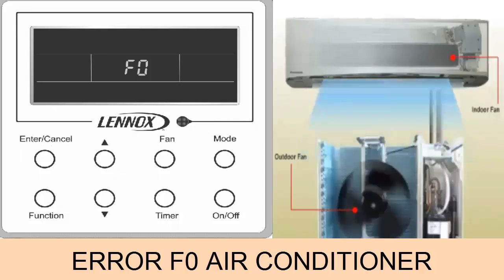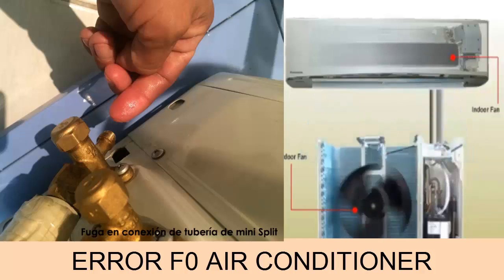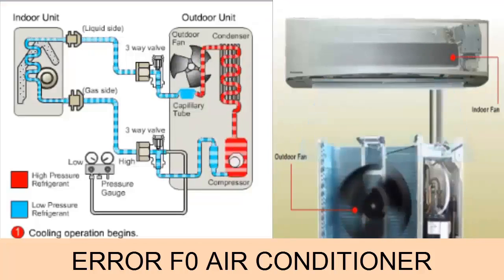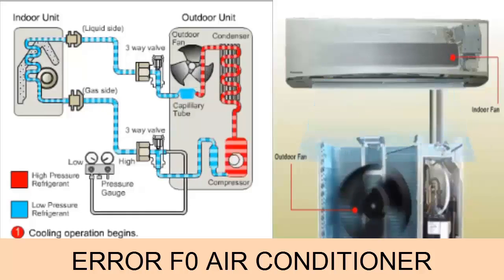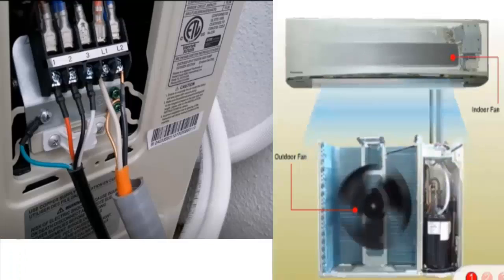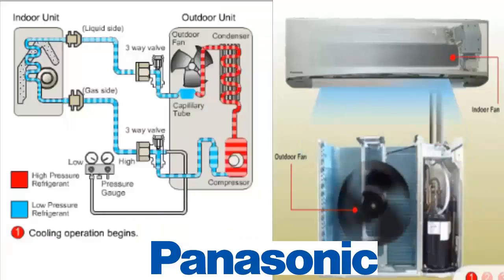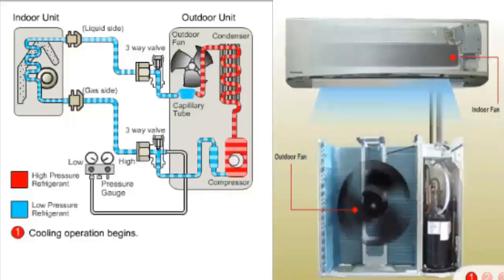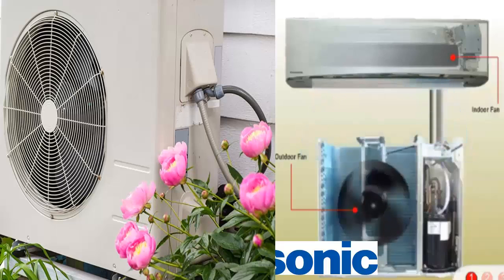In summary, error code F-Zero, depending on its meaning, can be attributed to various causes, such as: refrigerant leakage, which can affect system pressure and cause it to enter protection mode; issues with the ambient temperature sensor or coil temperature sensor; overcurrent in the system triggering error F-Zero due to protective mechanisms; and abnormal condenser fan speed, which can affect the cooling process and lead to errors.